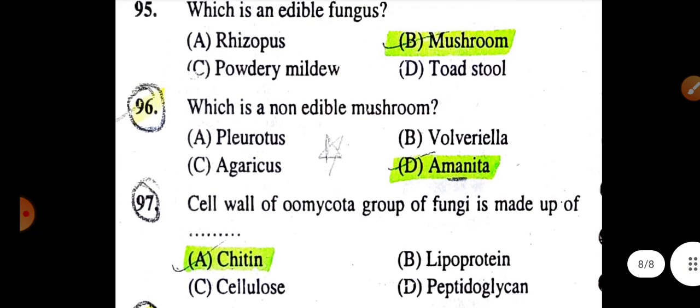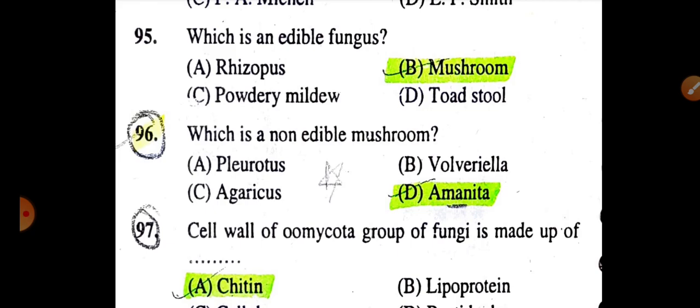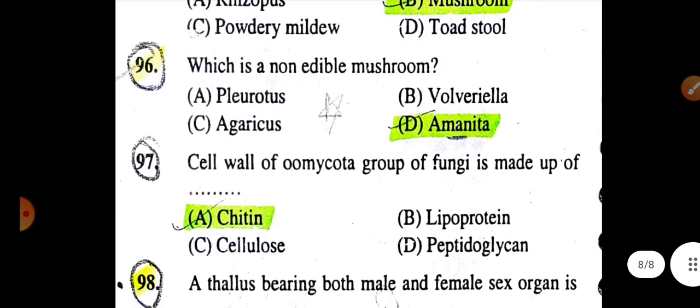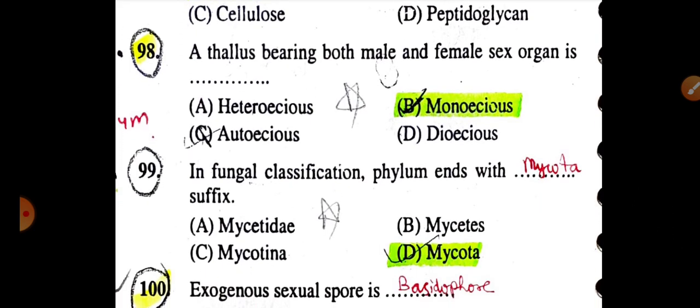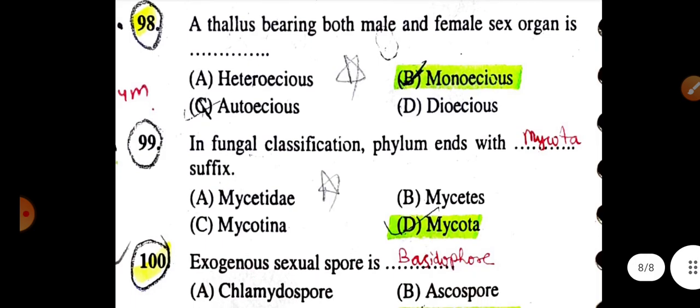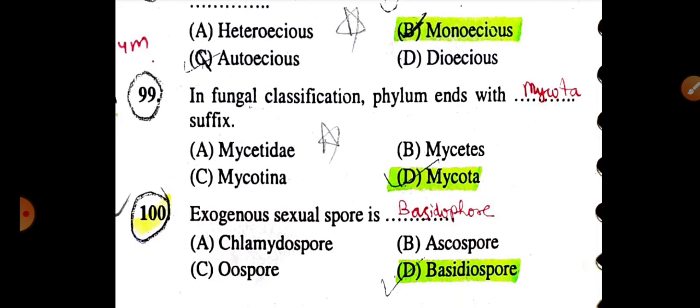Non-edible fungi include Amanita, Rhizopus, powdery mildew, and toadstools. Edible mushrooms include Agaricus, Pleurotus, and Volvariella. The cell wall of Eumycota group of fungi is made up of chitin. A thallus bearing both male and female sex organs is monoecious. In fungal classification, phylum ends with the suffix '-mycota'. Exogenous sexual spores are basidiospores.